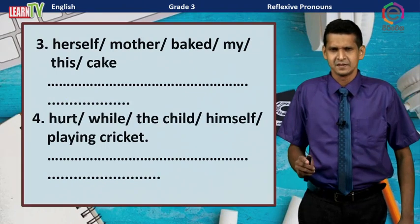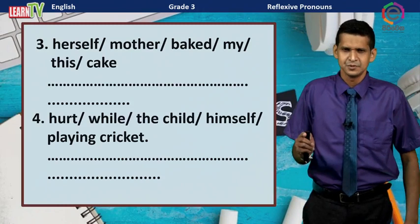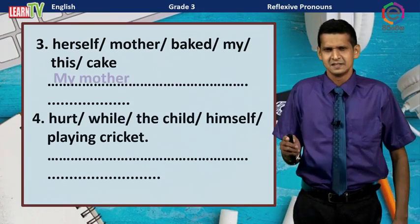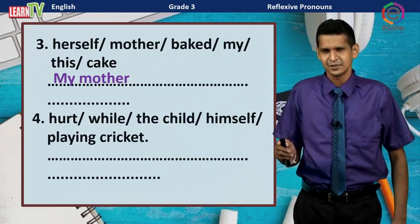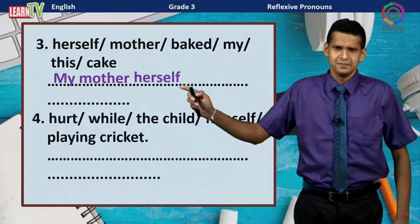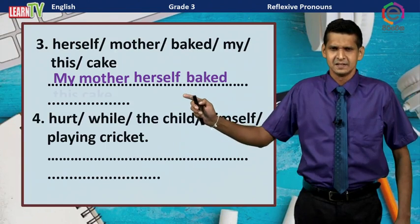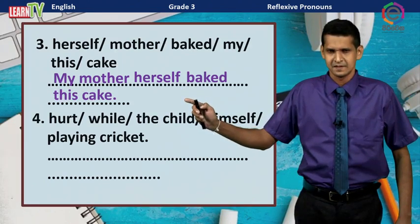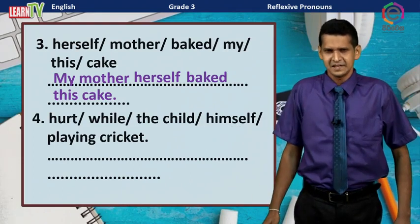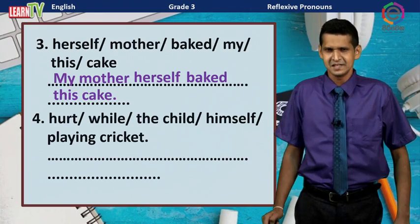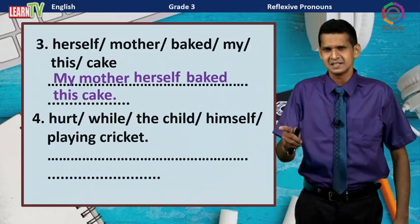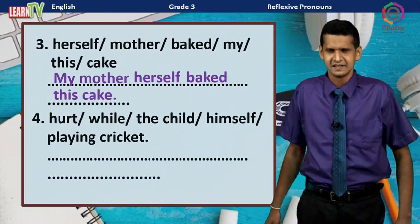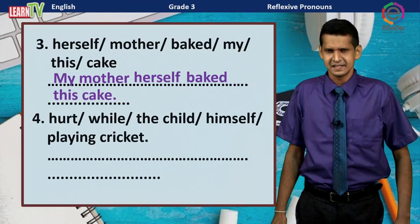Number three: The subject is 'my mother,' and the verb is a past verb. The sentence is: My mother herself baked this cake. We can also change the position of the reflexive pronoun when used for emphasis: My mother baked this cake herself.